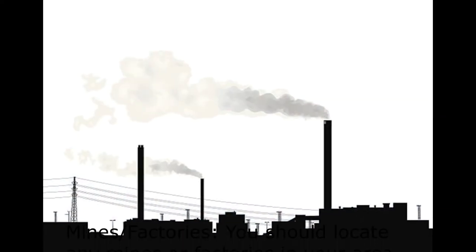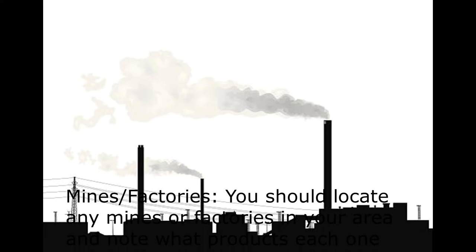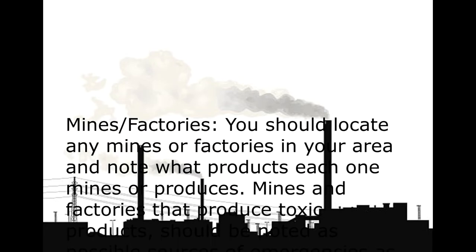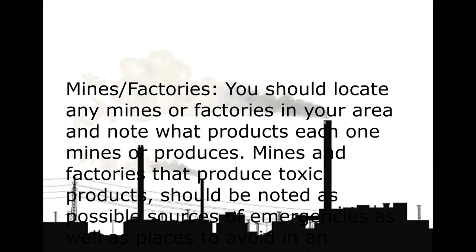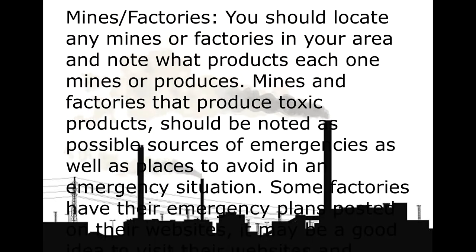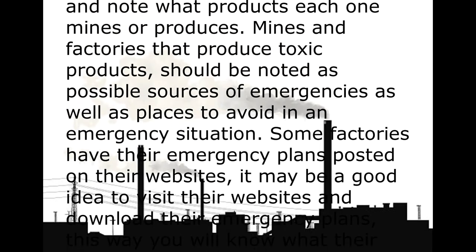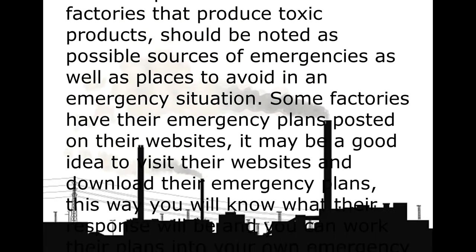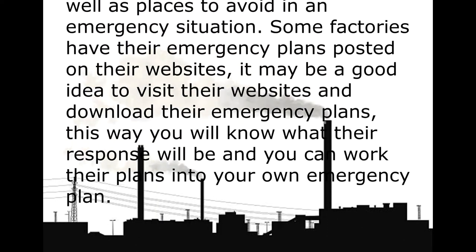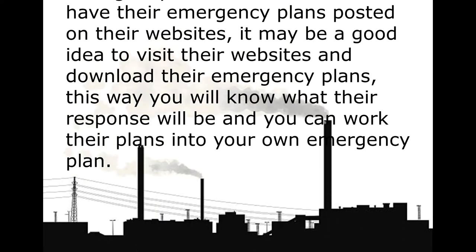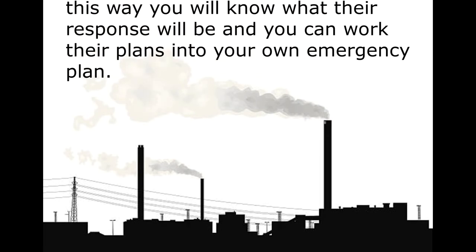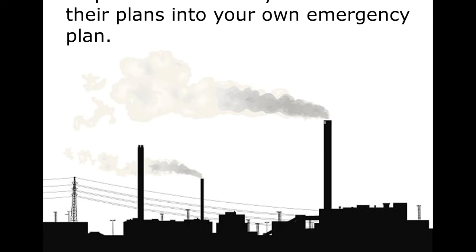You should locate any mines or factories in your area and note what products each one mines or produces. Mines and factories that produce toxic products should be noted as possible sources of emergencies, as well as places to avoid in an emergency situation. Some factories have their emergency plans posted on their websites. It may be a good idea to visit their websites and download their emergency plans, so you will know what their response will be and can work their plans into your own emergency plan.